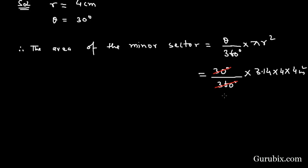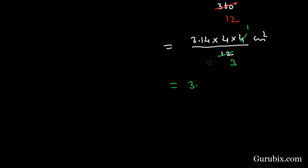We can cancel out 30 with 360, then we have 1 over 12. So this equals 3.14 times 4 times 4 centimeter squared over 12. We can cancel out this value, 4 times 3 is 12. Therefore, the final value is 3.14 centimeter squared. Therefore, the area of minor sector equals to 3.14 centimeter squared.